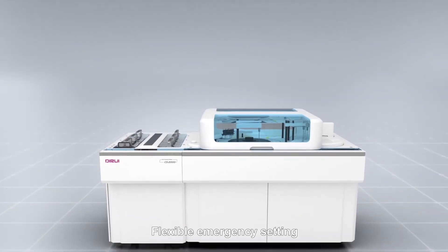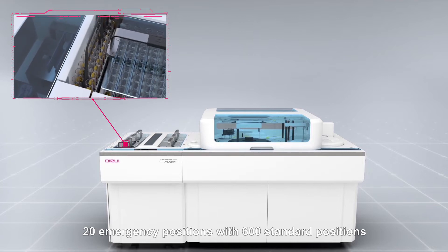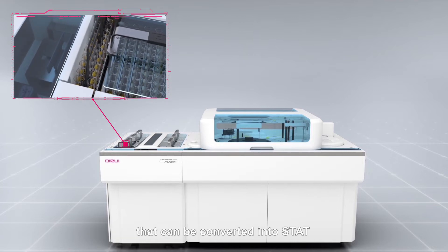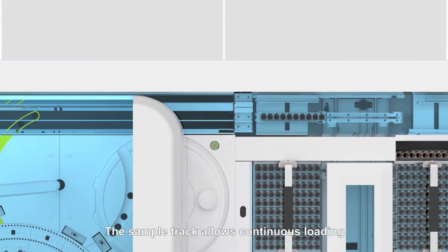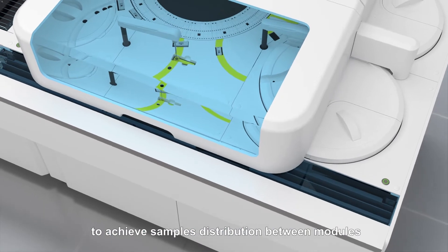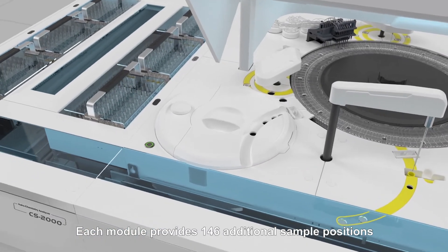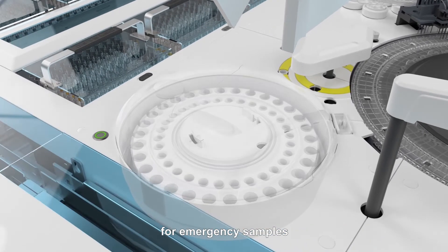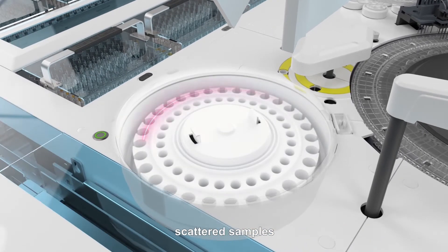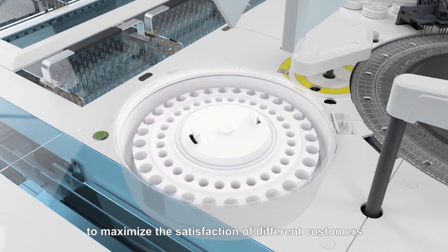Flexible emergency setting. 20 emergency positions with 600 standard positions that can be converted into STAT according to demand for rapid testing. The sample track allows continuous loading to achieve samples distribution between modules. Each module provides 146 additional sample positions for emergency samples, scattered samples, calibrators, and quality controls, to maximize the satisfaction of different customers.